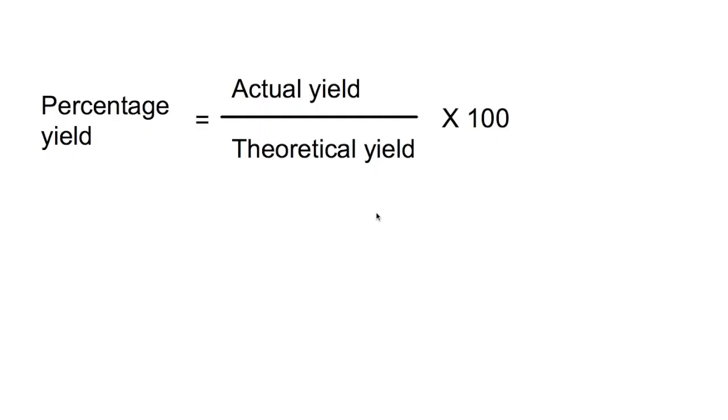Equally, if we have a high atom economy but a low percentage yield, it's unlikely to be profitable. This video focuses on calculating percentage yield using mass and proportion. If you would rather use moles, that's also possible and I've made another video looking at that method. This equation can be found in the front of your data book.